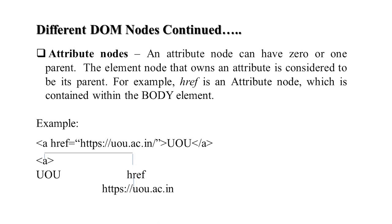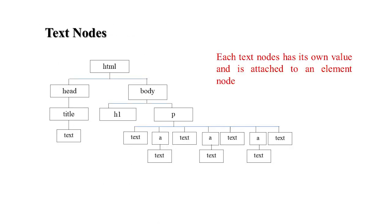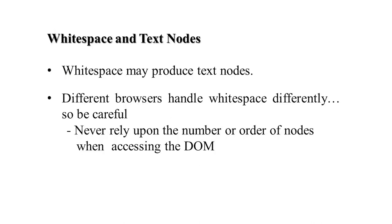This belongs to the attribute node type. Each text node has its own value and can be attached to an element node — HTML, head, body, title, text. White spaces may produce text nodes, such as line spaces. Different browsers handle white space differently, so never rely on the number or order of nodes while accessing the DOM.